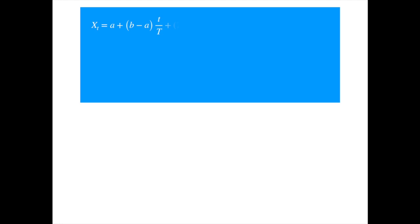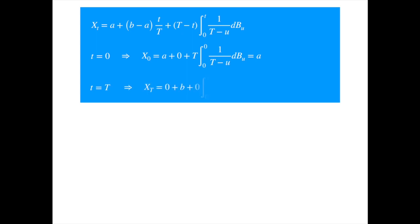Now that we have the solution, let's verify that the values at the left and right ends are indeed A and B. We reproduce the solution here. Substituting 0 for small t, we see that most of the terms vanish and we are left with A, as expected. Now plugging in capital T for small t, the first and third terms vanish and we get B. Hence the solution does give the required values at the two ends.